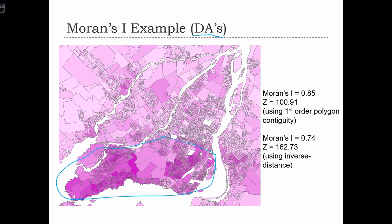When we compute a Moran's I using first-order queen's contiguity, we see a Moran's I of 0.85 — so a very strong and positive result. When we standardize the Moran's I into a Z-score, we have a Z-score of 100. So the probability of obtaining this map pattern by chance is probably less than 1 in 100 million. It's very, very significant.